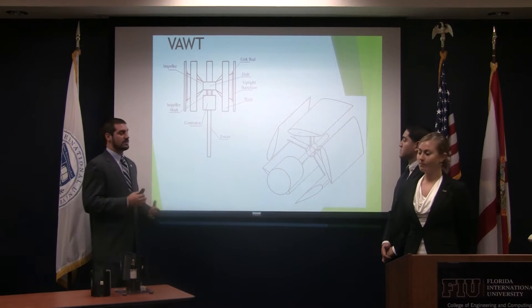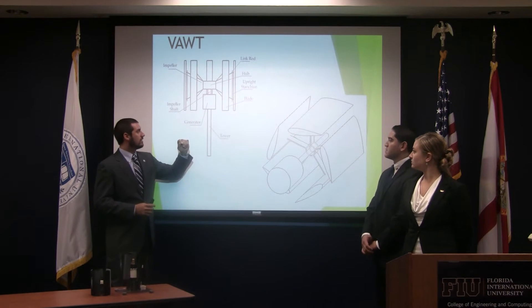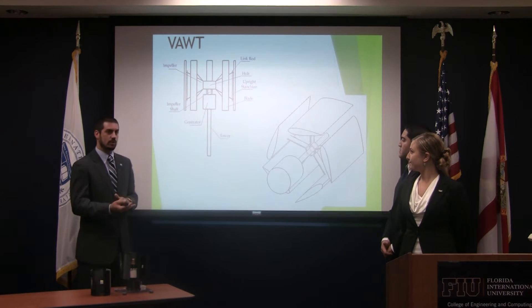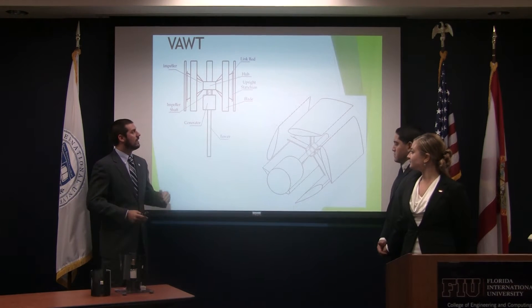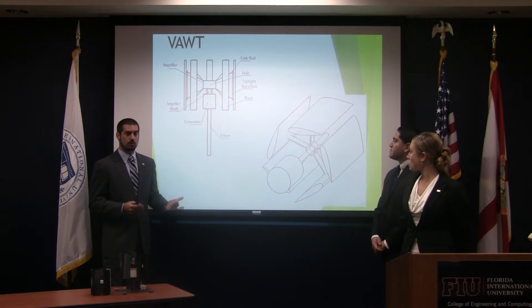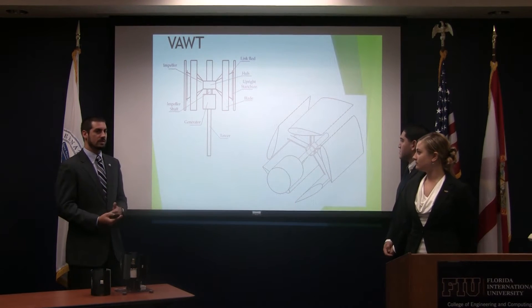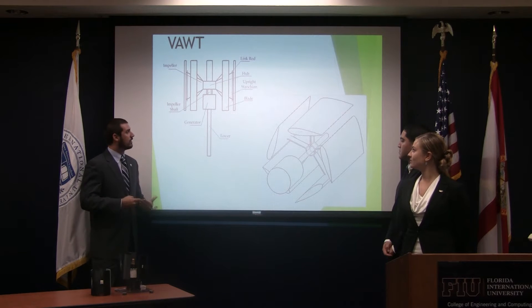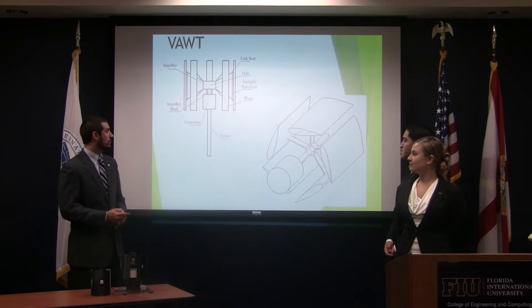To go over what a vertical axis wind turbine is: it is decided on the orientation of the rotor to the ground. Since it's perpendicular, it's considered a vertical axis wind turbine. They work omni-directionally, so no matter which way the wind source is coming from, they'll still rotate. They also work in low wind speeds, which is perfect for where we decided to use these. They also have a simple mechanical design, so the cost isn't as great as the larger scale ones.